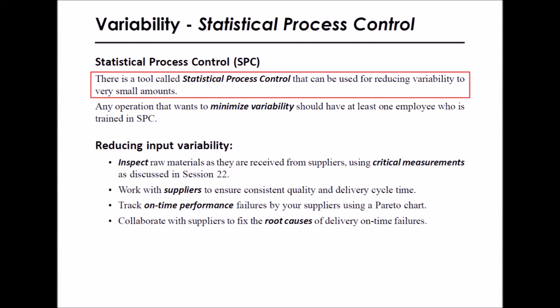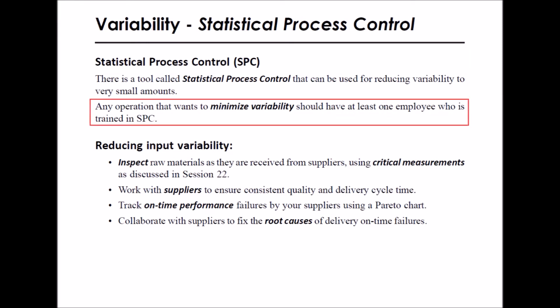Next, we will briefly mention a tool called Statistical Process Control, also known as SPC, that can be used for reducing variability to very small amounts. Any operation that wants to minimize variability should have at least one employee trained in SPC. SPC is beyond the scope of this course, but it is mentioned here because it is an important tool for reducing variability.